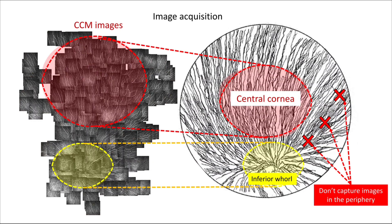Avoid capturing images in the periphery of the cornea, because the nerve density there is lower compared to that in the central cornea.